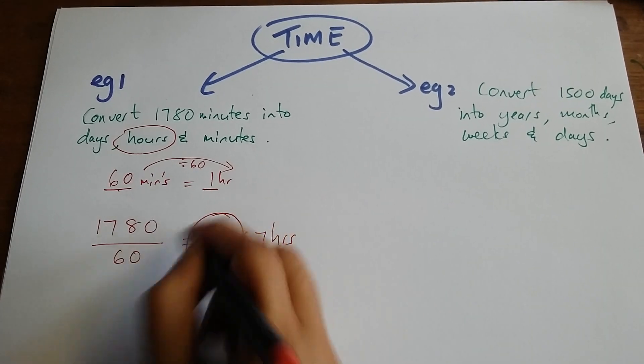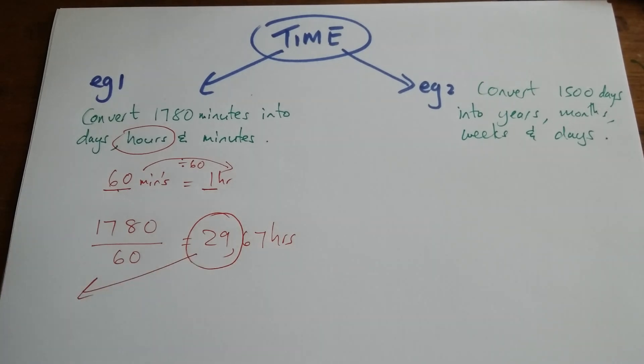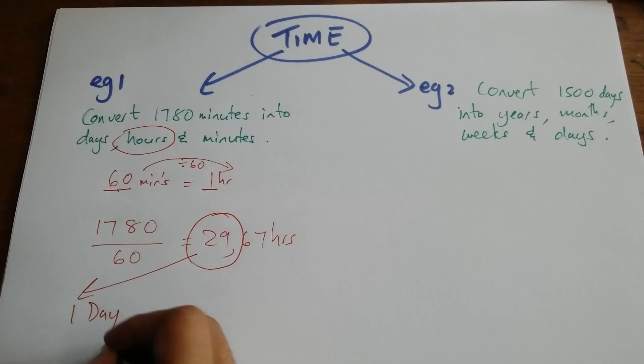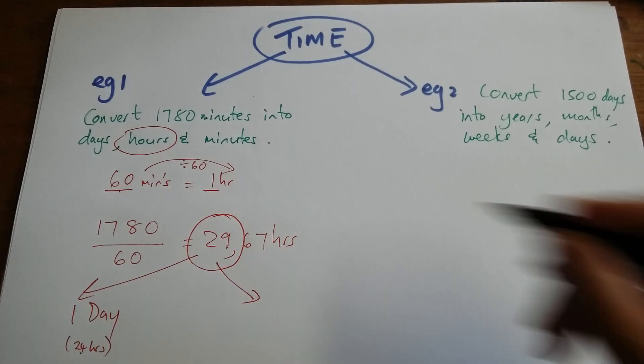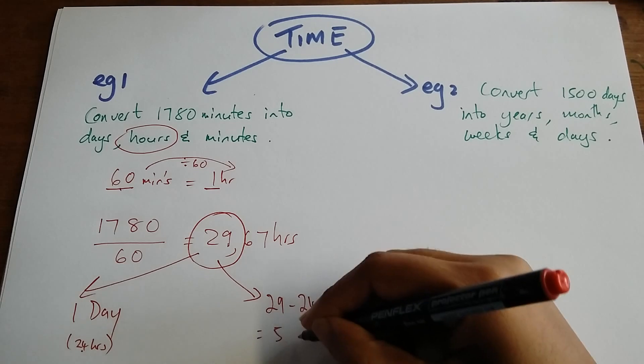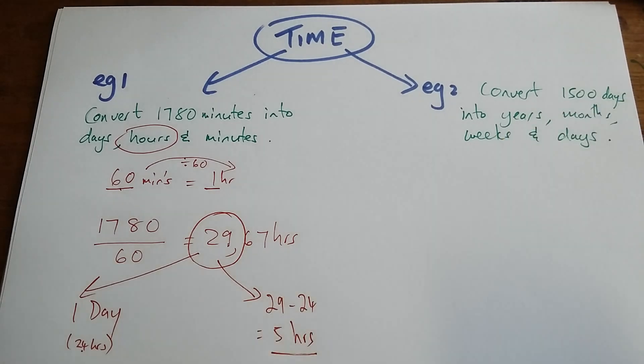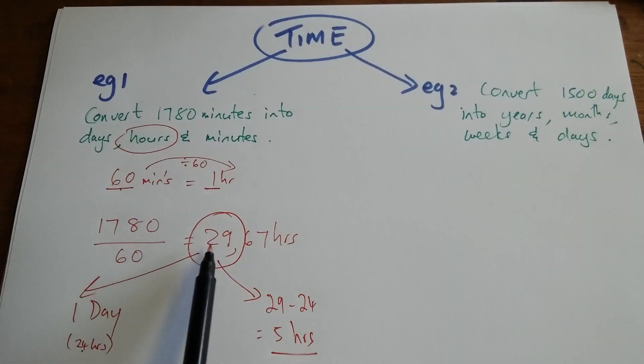I'm focusing on the whole number only, so 29 hours. I can take off 24 hours, which is the same as one day. So that's my 24 hours. From 29, if I take away the 24, I'm then left with 5 hours. So what we're saying is 1780 is the same as one day and 5 hours.